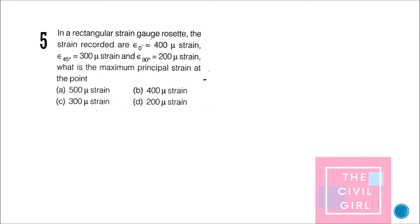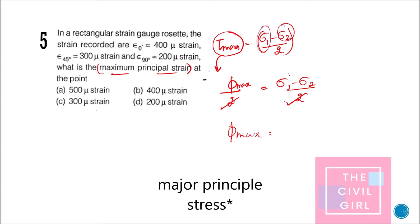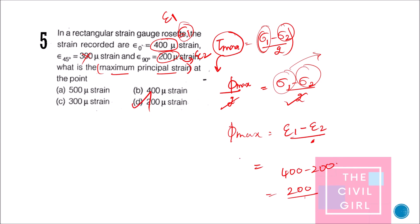Next question: for a rectangular strain gauge rosette recording epsilon_0°, epsilon_45°, and epsilon_90°, what is the maximum principal strain? You don't need a separate formula — recall that tau_max = (sigma 1 − sigma 2)/2. When replacing shear stress with shear strain, gamma_max/2 = (epsilon 1 − epsilon 2)/2, so gamma_max = epsilon 1 − epsilon 2. Here, epsilon 1 = 400 (maximum) and epsilon 2 = 200 (minimum), so the answer is option D.